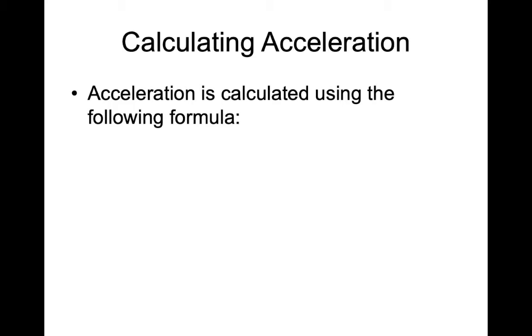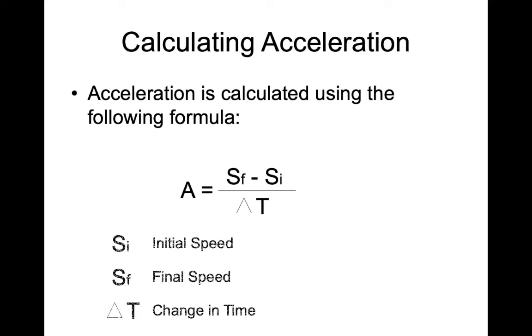You can also calculate acceleration as long as you put your focus into changes in speed. We're not going to try to understand calculating acceleration when direction changes. Acceleration is calculated using the following formula. A is equal to SF minus SI all over delta T. Let's take a minute with that. SF represents the final speed of the object, what it ends up going. SI represents the initial speed of the object, what it began at or started as going. And delta T represents change in time. The Greek letter delta, which is a triangle, or the symbol of a triangle is used for it, means change. So delta T is the change in time it took to go from the initial speed to the final speed.